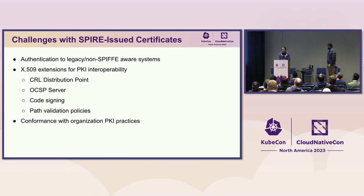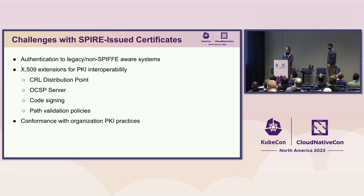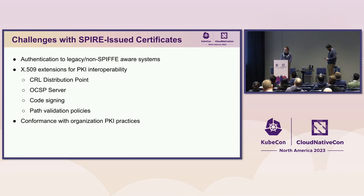Consider a workload that receives an identity on startup but is not always connected to a SPIRE agent, such as in a serverless or edge computing environment. In these cases, being able to integrate SPIRE certificates with existing revocation infrastructure using OCSP or CRLs provides value because it mitigates the impact of an identity being compromised. Additionally, you may have workloads in your build pipeline that perform code signing using certificates issued by SPIRE. In order to restrict that only certain workloads have code signing privileges in a trust domain, you may want to set the code signing extended key usage bit in the build workload certificate. Or perhaps you have more advanced use cases for certificate path validation and want to enforce path validation policies using the policy constraints extension from X509.